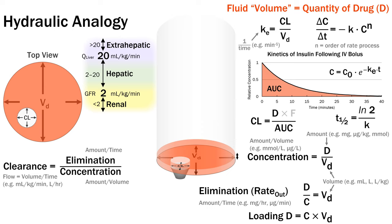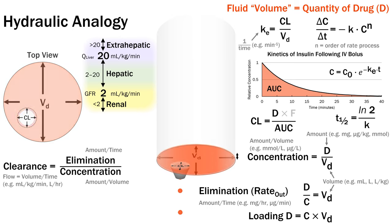In a first-order process, after each small time interval the drug redistributes to occupy the cleared volume at a fractionally lower concentration, leading to this exponential decay pattern. First-order elimination is more efficient when the concentration is relatively high.